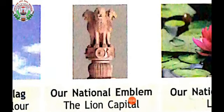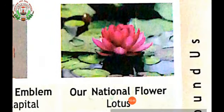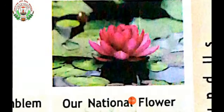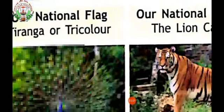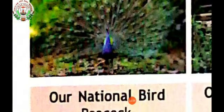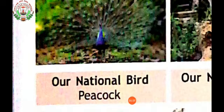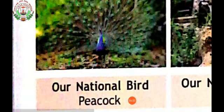Now come to the next picture. What is this, children? This is a lotus. Which is our national flower? Lotus is our national flower. Now come to the next picture — what is this, children? This is a peacock, a beautiful bird. Which is our national bird? Peacock is our national bird.